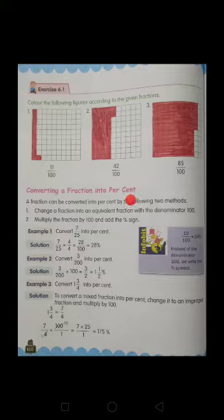So per is upon, cent is 100. So it is upon 100 of a number. Here the examples of fractions are given and you have to find their percent. The first fraction is 7 upon